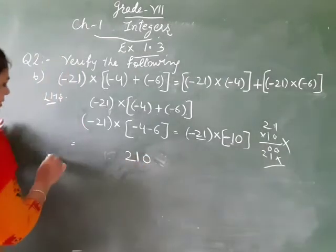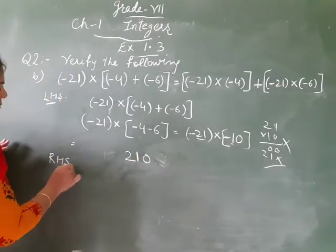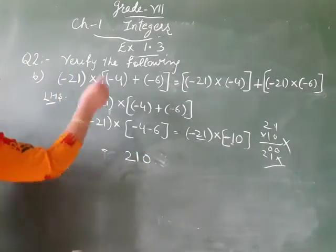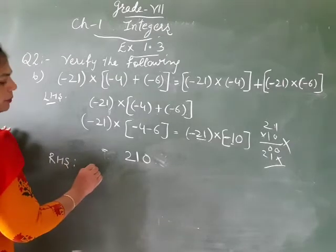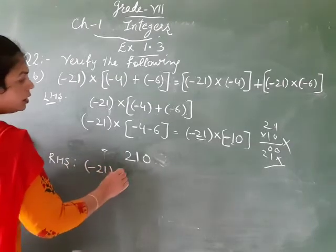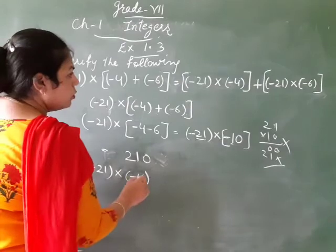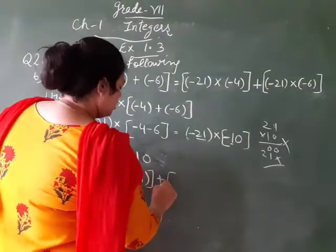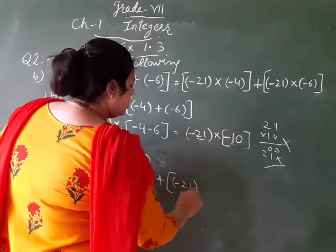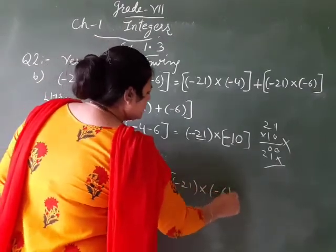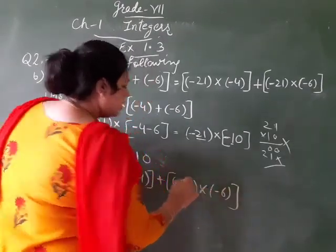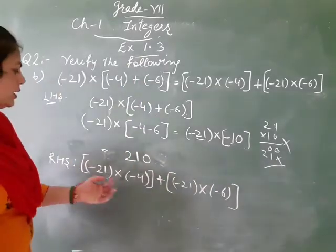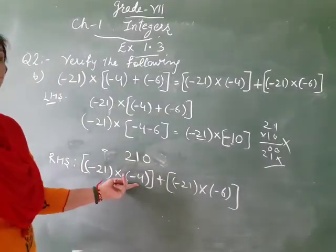So now, come to right hand side. Right hand side is (-21) × (-4) + (-21) × (-6). Firstly, we solve the bracket.